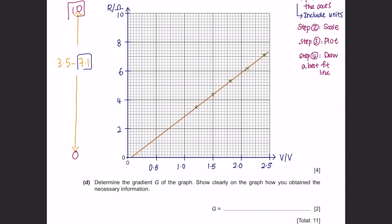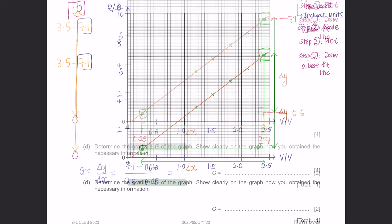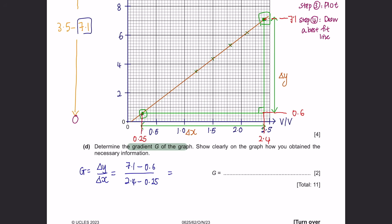Question D. Determine the gradient of the graph. Show clearly on the graph how you obtained the necessary information. Take two points apart and use the triangle method to find the change in x and change in y for the gradient. Make sure to clearly mark the points chosen on the graph. My calculation gives a gradient of 3.0. According to the marking scheme, any value between 2.8 and 3.2 is acceptable.